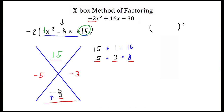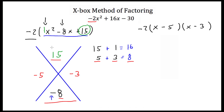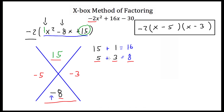So we draw our parentheses and go back to this leading coefficient — this is a 1. So both of these parentheses will have just x in them, and then a minus 5 and a minus 3. Don't forget about our negative 2 out front. And this is the factored form of our quadratic equation: negative 2 times (x minus 5) times (x minus 3).